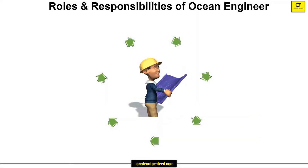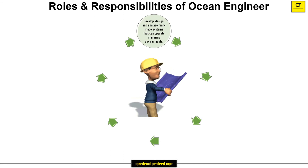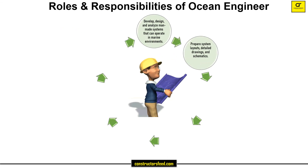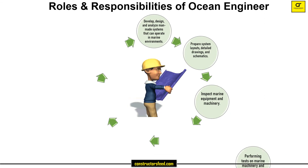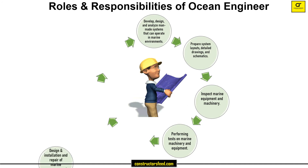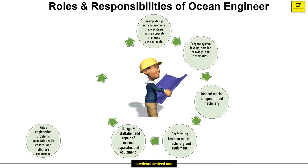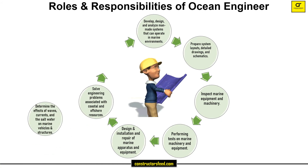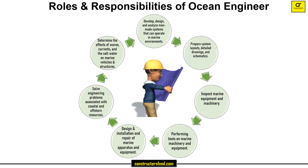Some of the roles and responsibilities of an ocean engineer: develop, design, and analyze man-made systems that can operate in marine environments; prepare system layouts, detailed drawings, and schematics; inspect marine equipment and machinery; perform tests on marine machinery and equipment; design, install, and repair marine apparatus and equipment; solve engineering problems associated with coastal and offshore resources; and determine the effects of waves, currents, and salt water on marine vehicles and structures.